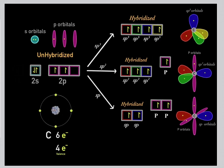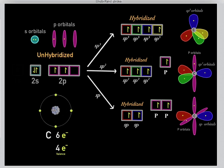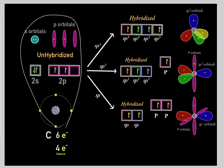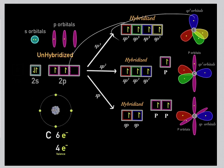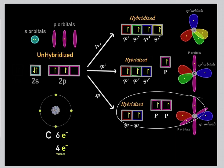In nature, you will never see a carbon that has one s orbital and three p orbitals. In reality, what happens is these orbitals go through hybridization: either sp3, sp2, or sp hybridization. So if you were to look at real carbons in our world, you would see carbons in these different forms of hybridization.